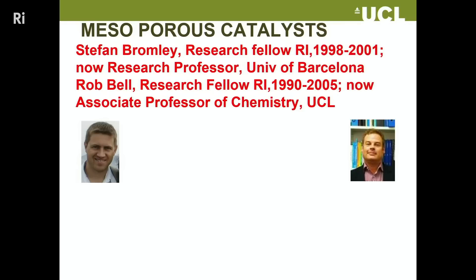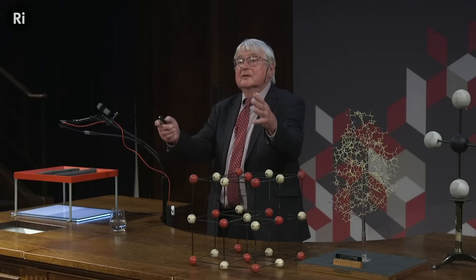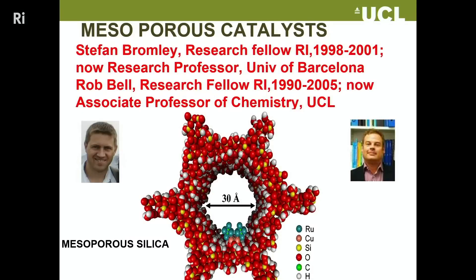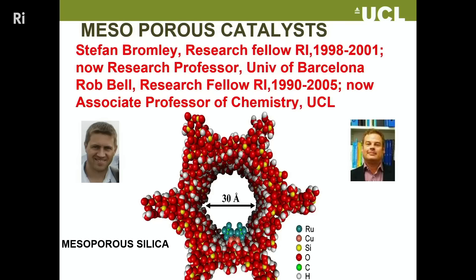In the early 1990s, another class of silica systems was discovered — mesoporous catalysts with much bigger pores allowing really big molecules like pharmaceutical molecules to enter. Work here at the Royal Institution helped understand the structure of these systems. They have a nice honeycomb structure, and the arrangement of silicon and oxygen atoms in the walls was predicted here by Rob Bell, now at UCL. You can implant a metal nanoparticle inside the mesoporous silica, and the structure and properties of that were determined by Stephen Bromley, now a professor at the University of Barcelona.